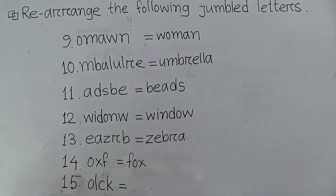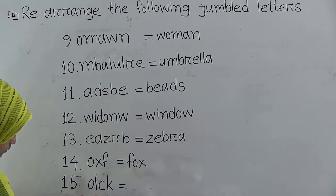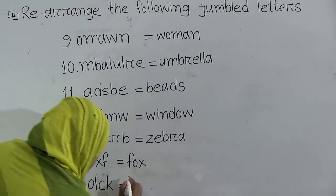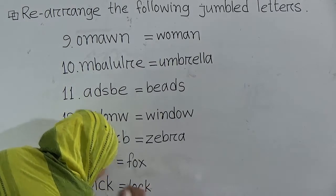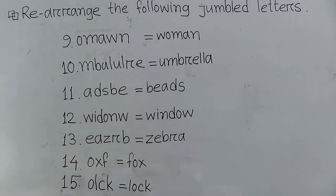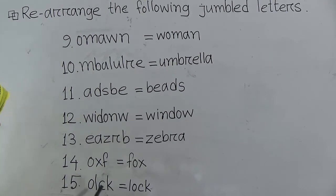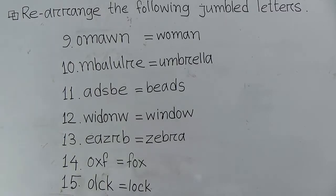Number 15: the given letters are O, L, C, K, I. The word will be 'lock' — L-O-C-K. First L, second O, third C, and at last K — 'lock.'